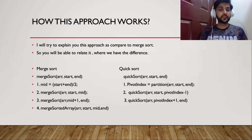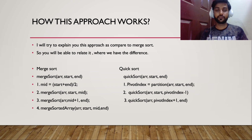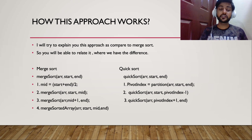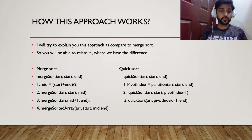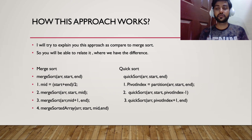In MergeSort, after finding the mid, we recursively call the left half (start to mid) and right half (mid+1 to end). Similarly in QuickSort, we call the same function for (start to pivot_index-1) and (pivot_index+1 to end). The key extra step in MergeSort is merging the sorted halves — without that the array won't be sorted. In QuickSort, this merge step is not needed; the sorting logic is handled inside the partition method itself.